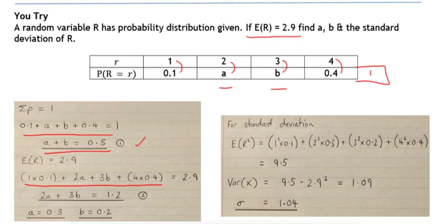That gives us the second of two simultaneous equations, and then we can solve them to get our value for A and B.